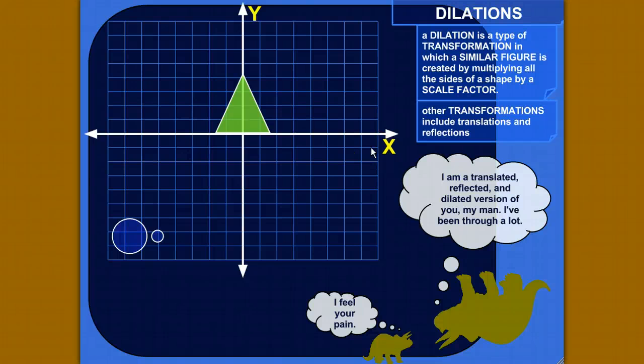So dilations are a type of transformation, and you might have heard of other transformations like translations or reflections or rotations, and these are all ways to transform or change an object into something that's different but related.